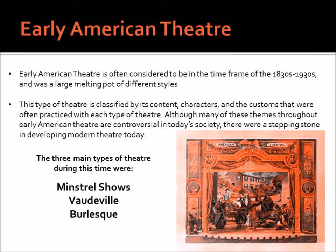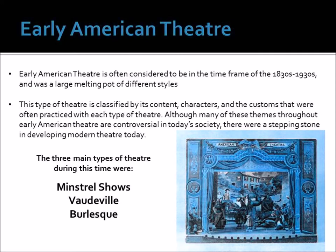Here's Early American Theatre. Early American Theatre is often considered to be in the timeframe of the 1830s to 1930s, although it's pretty flexible, and it was a large melting pot of different styles. This type of theatre is classified by its content, characters, and the customs that were often practiced with each type. Although many of these themes are controversial in today's society — for example, blackface and misogyny — they were a stepping stone in developing modern theatre today.